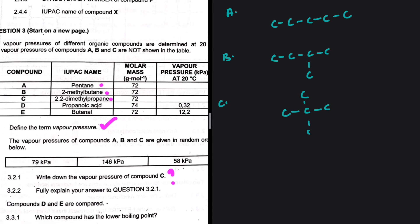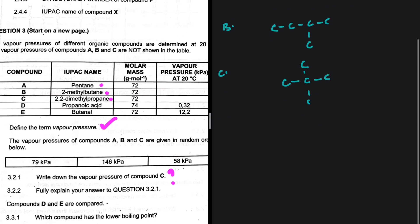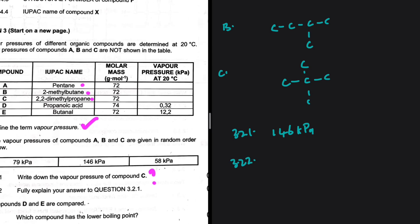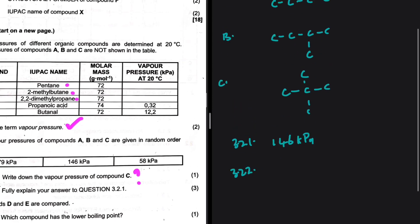Which vapor pressure can we relate to compound C? The highest vapor pressure. The answer to 3.2.1 should be 146 kilopascals. Now for 3.2.2, we are supposed to explain why, and that is worth three marks.